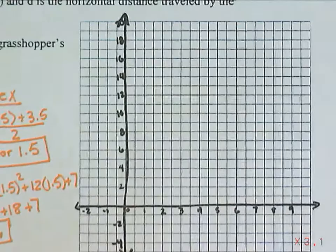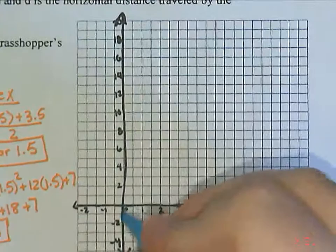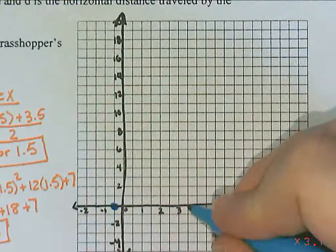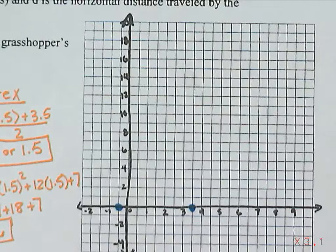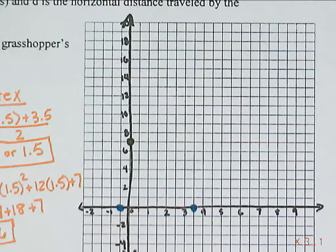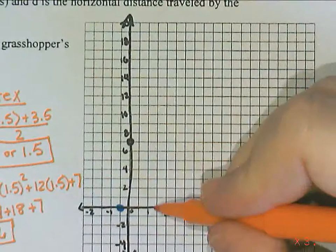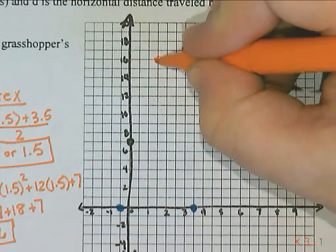So on my graph, I'm going to start by marking on my x-intercepts. My x-intercepts were negative 0.5, which is going to be this first square here on the x-axis, and 3.5, which is going to be halfway between 3 and 4. My y-intercept is 7, which should be up here between 6 and 7 on the y-axis. And my vertex is 1.5, so halfway between 1 and 2, and positive 16, so way up here.